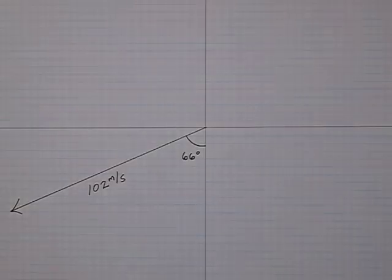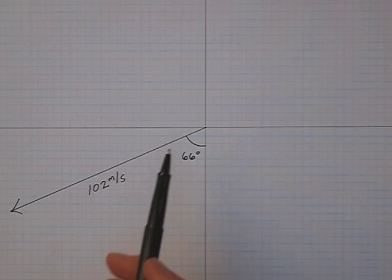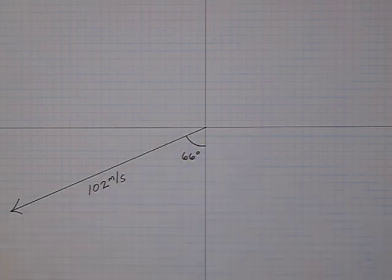Let's look at another problem where we want to find the x and y components of the vector. Here you see we have a vector which is 102 meters per second at an angle 66 degrees clockwise from the negative y-axis, and I'd like to find the x and y components.